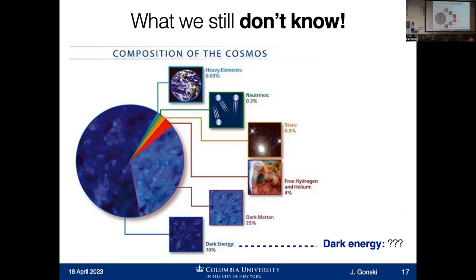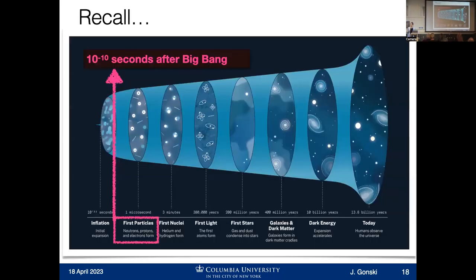How do we actually find answers to these questions and bring these phenomena into the model? I want to go back to the cartoon of the evolution of the universe to explain how we answer these questions. I want to highlight the point where those first particles were produced — one microsecond after the Big Bang. The universe is expanding, and from that Big Bang the universe has gotten a lot bigger. Energy conservation tells us the amount of energy in the early and today's universe is the same, but today's universe is much colder — all that energy is much more spread out.